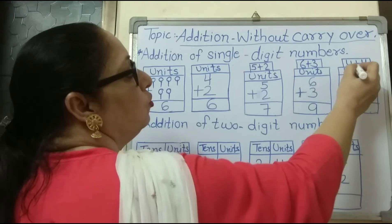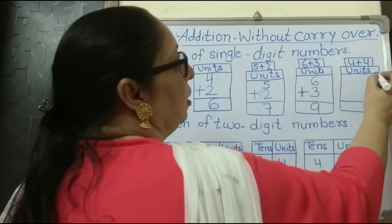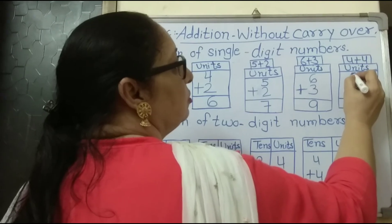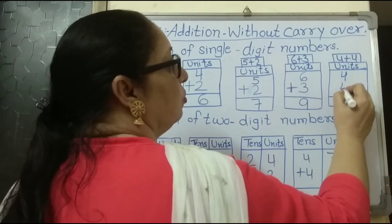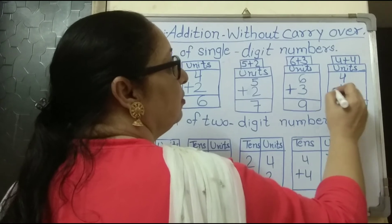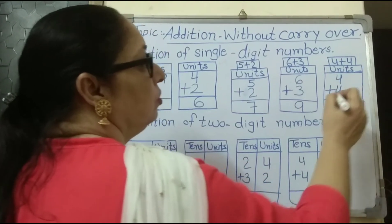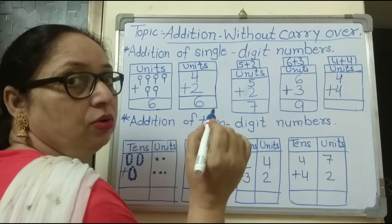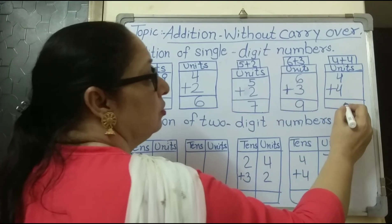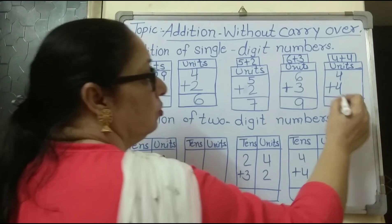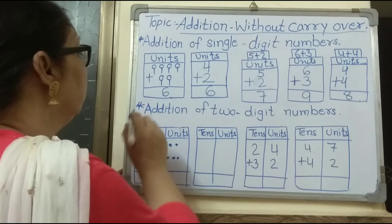The next number is four plus four. The unit column is here. Write the first four units, then the next number is four. Sign it down. Four plus four — how many numbers are there in total? Four plus four is equal to eight.